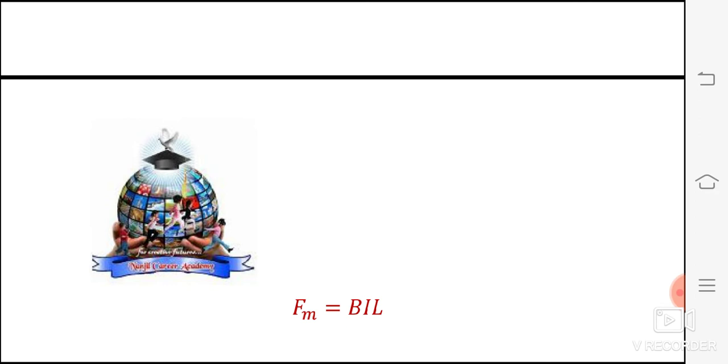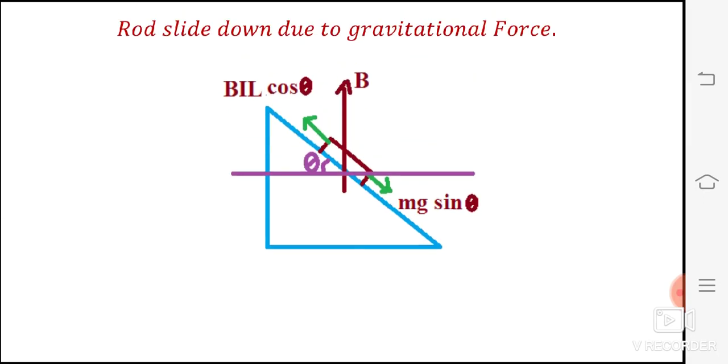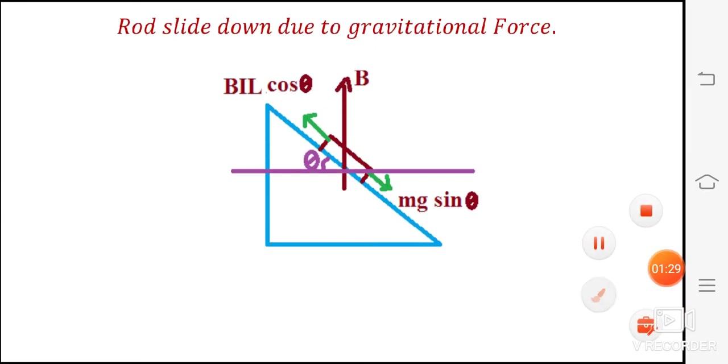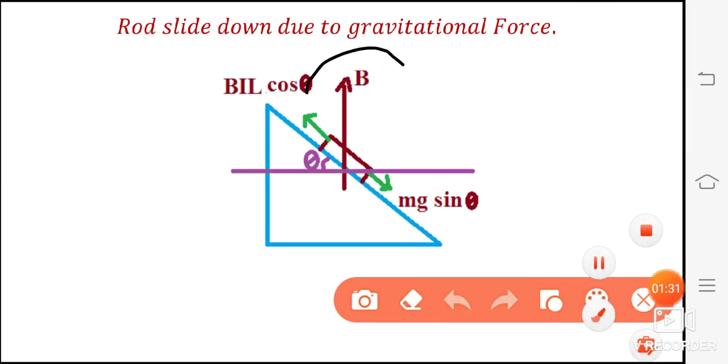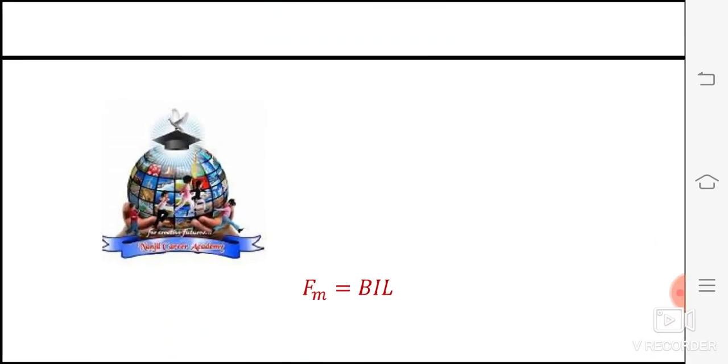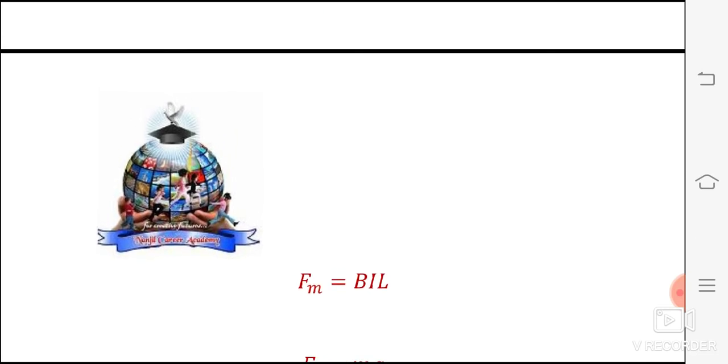Force due to magnetic field - magnetic field acts in the vertical direction. Due to this a force occurs whose magnitude is fm is equal to bil.